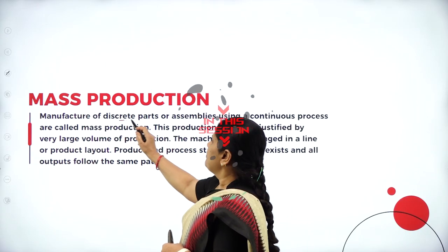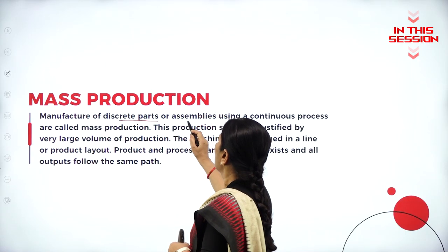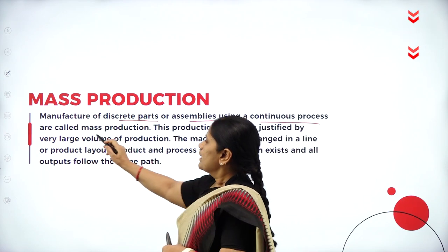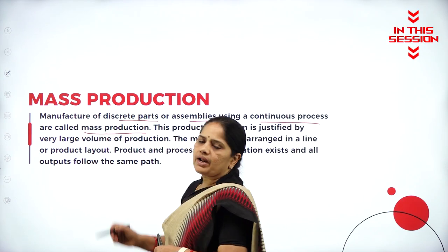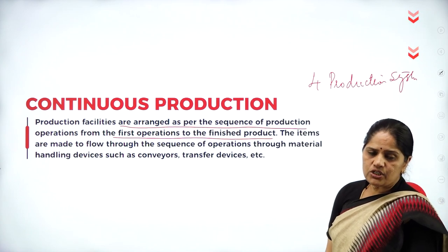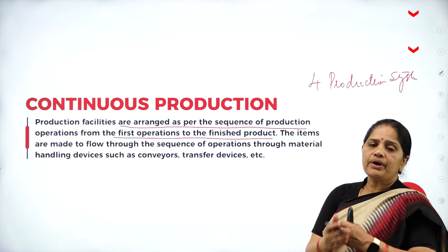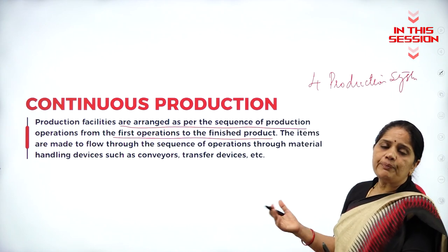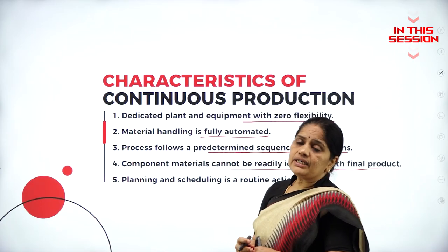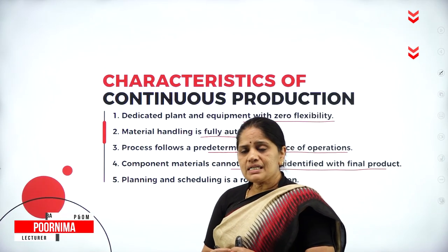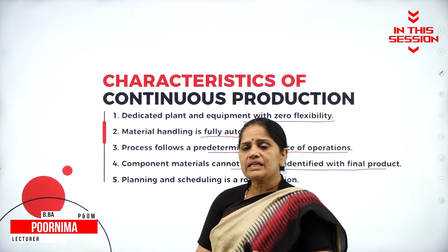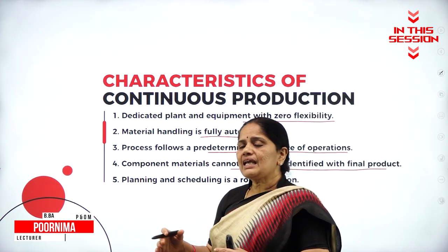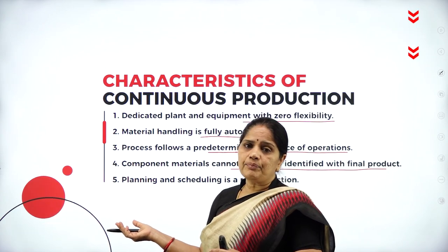The manufacture of discrete parts or assemblies using a continuous process is called mass production. In continuous production, the production facilities will be arranged as per the sequence of production operations. Whatever raw materials go into the making of the product cannot match with the final product.